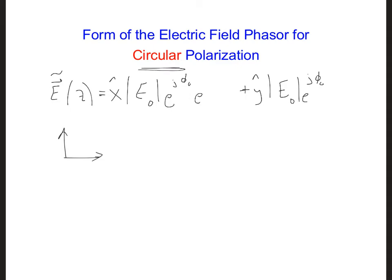So if I have E to the minus gamma z here, and if I also have E to the minus gamma z for this y hat term, I'm going to add an extra phase here: E to the plus or minus j pi over 2, which depends on whether it is right or left hand circularly polarized.